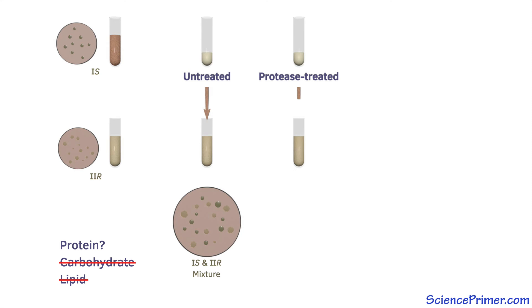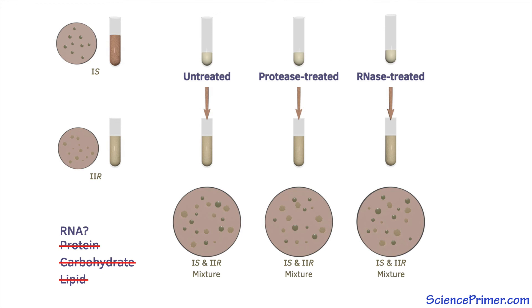This extract was then treated with a protease which is an enzyme that breaks down protein. Using the same system, they showed that the transformation still occurred indicating that the transforming principle was not made of protein. Next, the transformation test was again successful, with a mixture of both type 1 smooth and type 2 rough cells growing on the plate, indicating that the transforming principle was not made from protein or RNA.